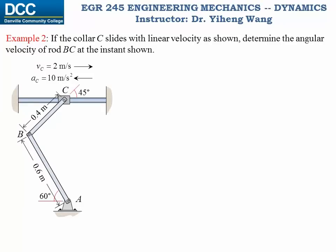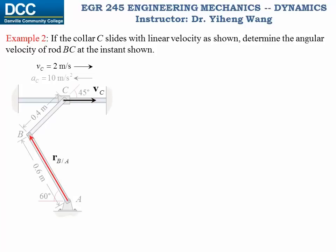Let's revisit the problem we looked at in the previous video and try to solve the angular velocity of rod BC using the instantaneous center of zero velocity. We can use this approach because we can easily determine the directions of linear velocities of point B and point C, both of which belong to rigid body rod BC. Since collar C is only able to move horizontally and its velocity is given, and since point B also belongs to rod AB which is doing rotation about a fixed axis at point A, its velocity is perpendicular to its relative position vector. We draw lines through point B and point C perpendicular to their linear velocities respectively, and the intersection is the instantaneous center of zero velocity.